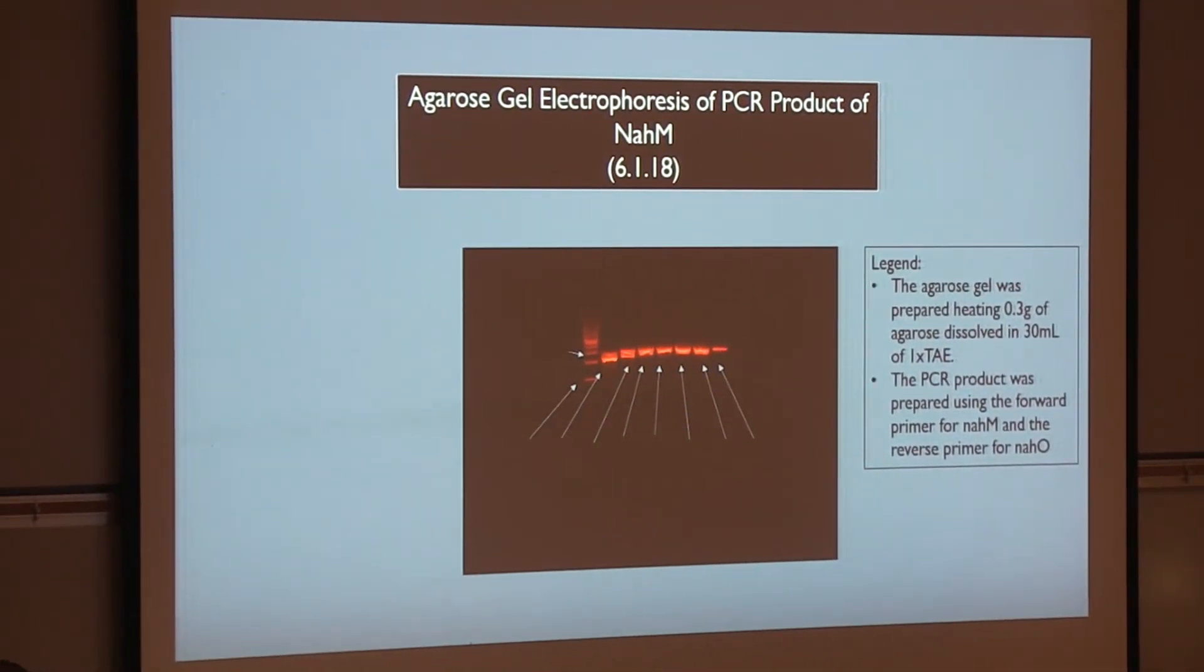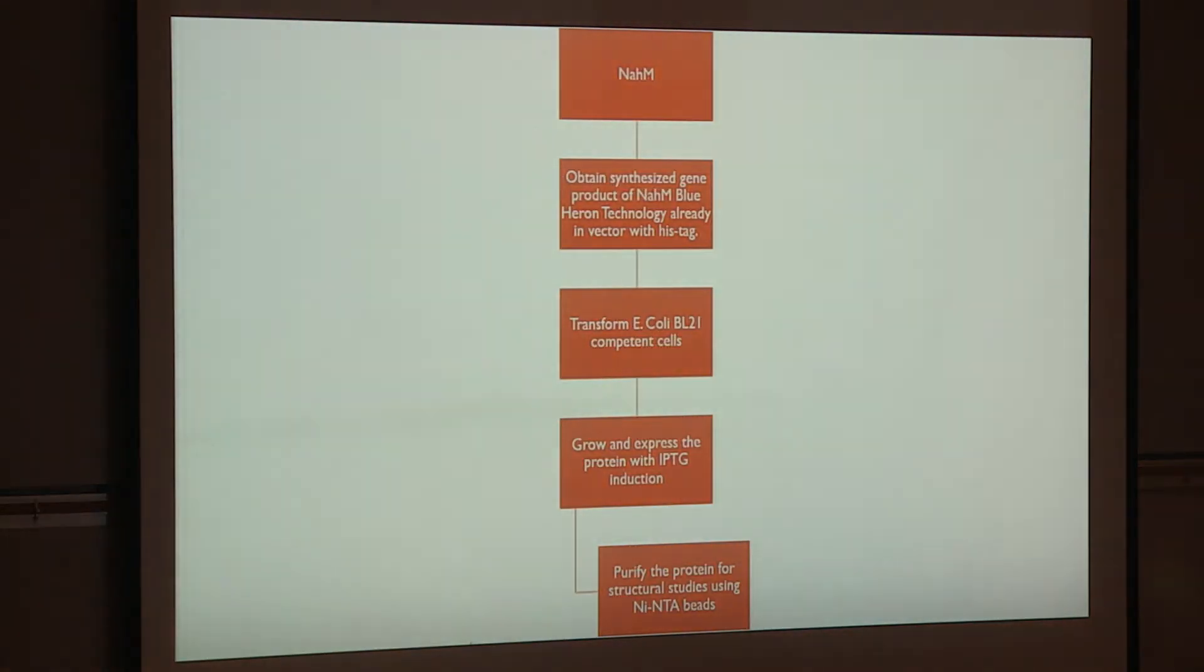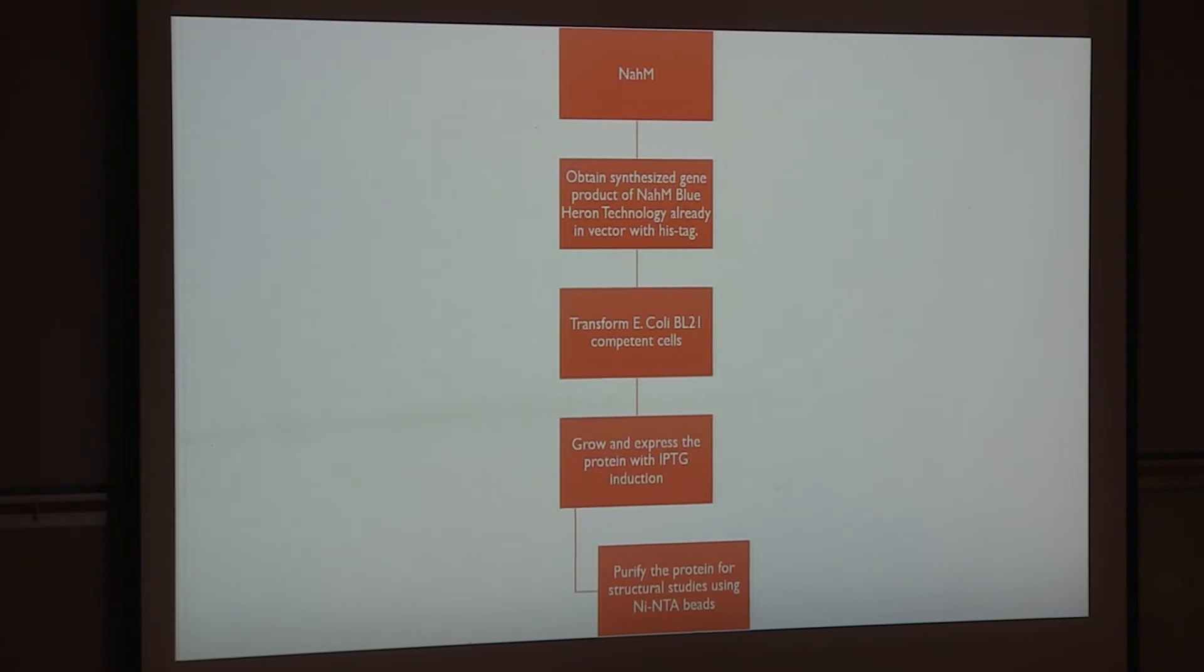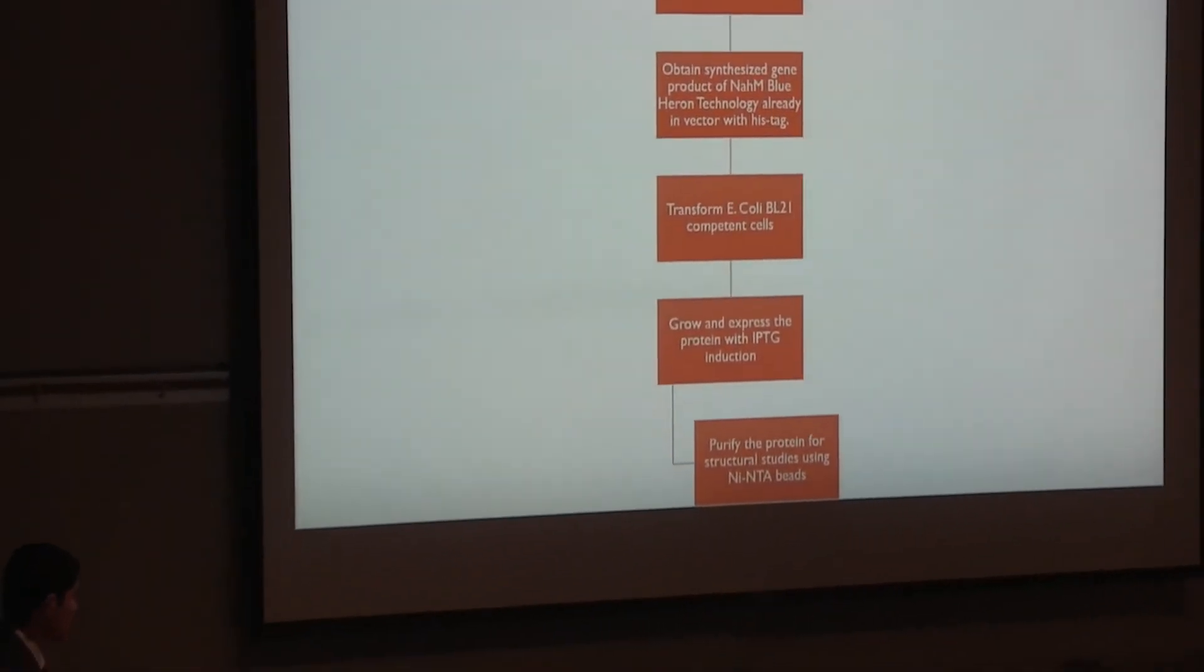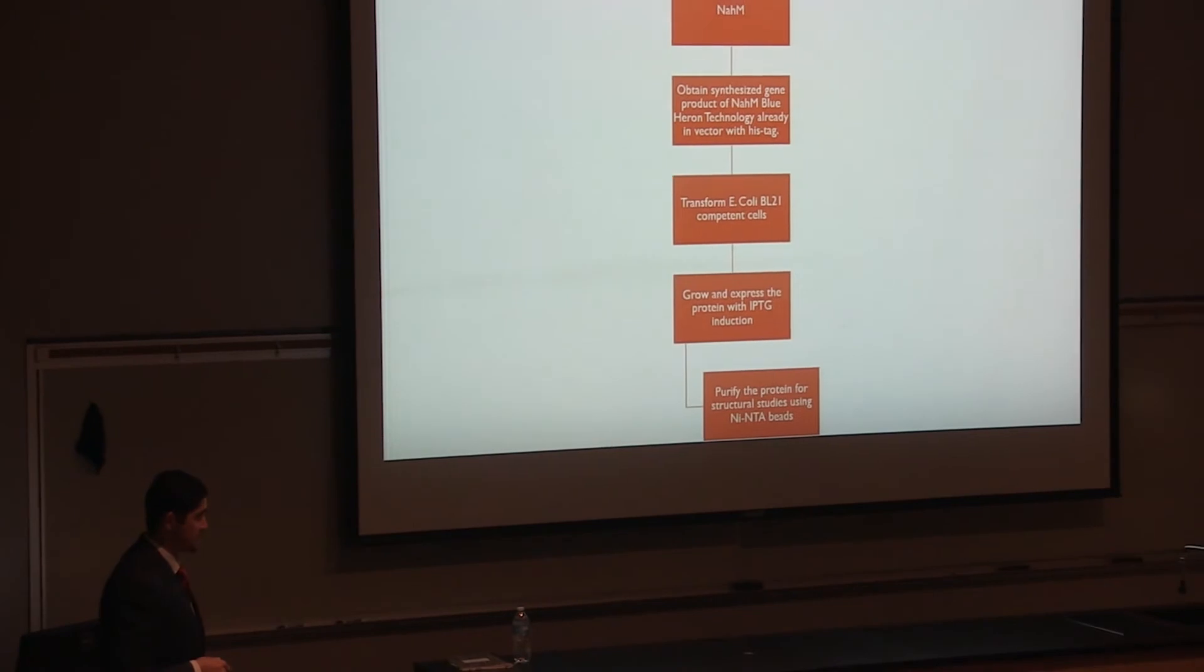At this point, no more work is being done on NAHOM due to the absence of a vector which is required for ligation and future transformation, culture growth expression, and purification. Regarding NAHM, so far we have obtained the synthesized gene product for NAHM from Blue Heron technology in a vector with His-tag. We have transformed the gene into E. coli competent cells, and we have grown the cells and expressed the protein using the IPTG induction. Lastly, we are purifying the protein using nickel IMAC.